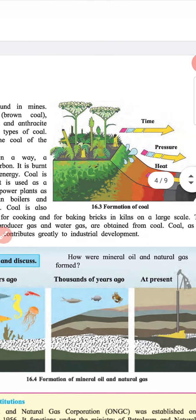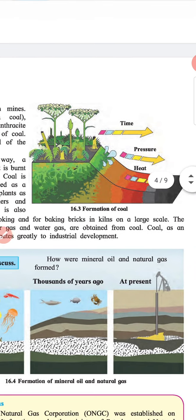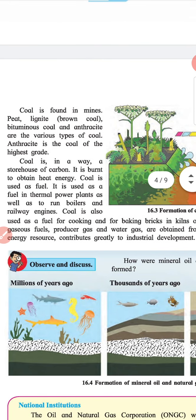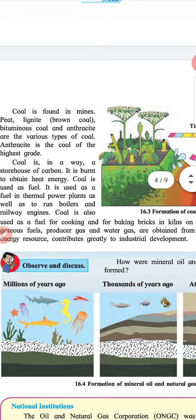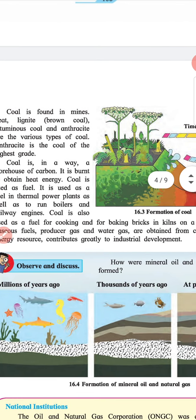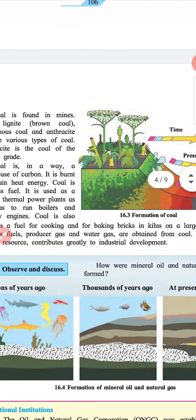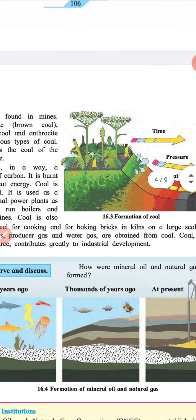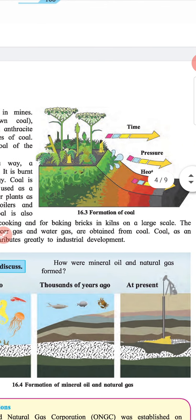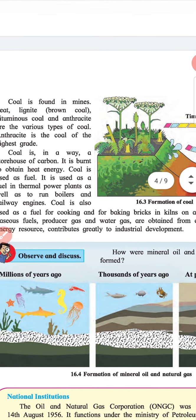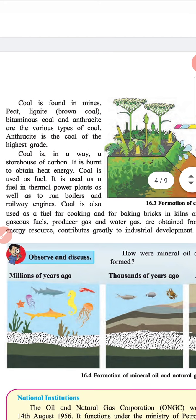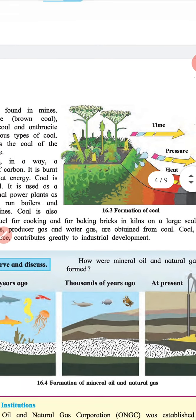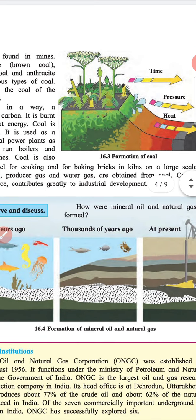Coal is used in kilns on a large scale. The gaseous fuels, producer gas and water gas, are obtained from coal. Coal as an energy source contributes greatly to industrial development.